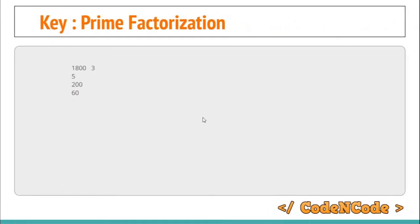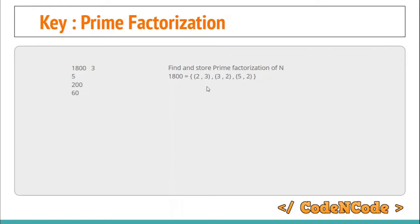Although this approach is worse than the previous one, it is important as it is the basis of the algorithm we are going to build that can answer queries in log N time. To answer queries in log N time we are going to use prime factorization. Whenever you are working with number theory involving divisors and GCD, always think in terms of prime factorization — it helps a lot. For N, we find its prime factorization. For example, if N is 1800, the prime factorization would be 2^3 × 3^2 × 5^2. This requires O(√N) time, but it is a one-time computation.